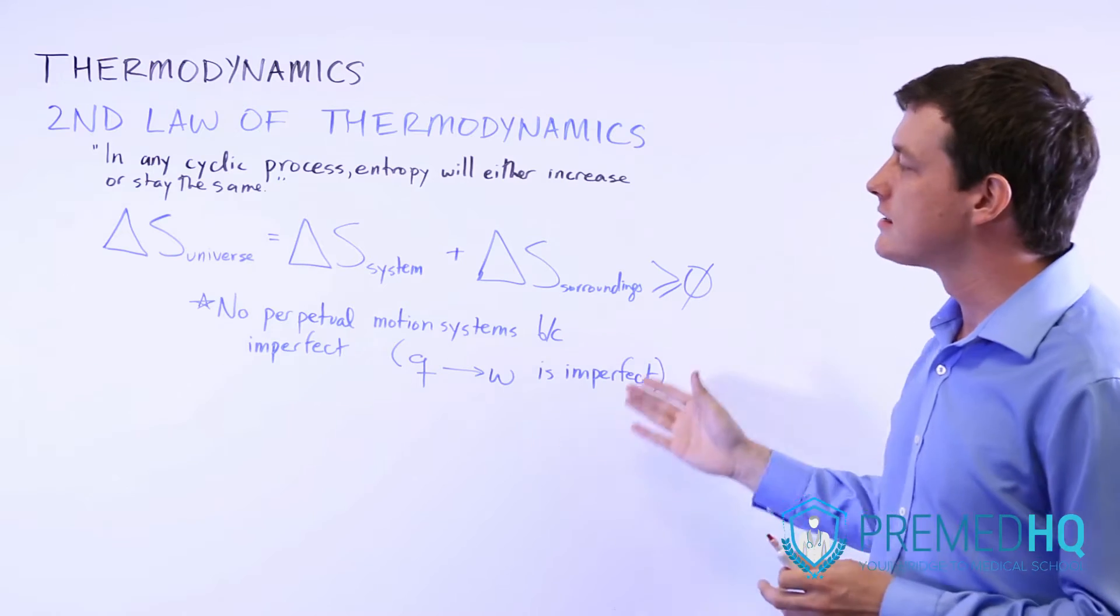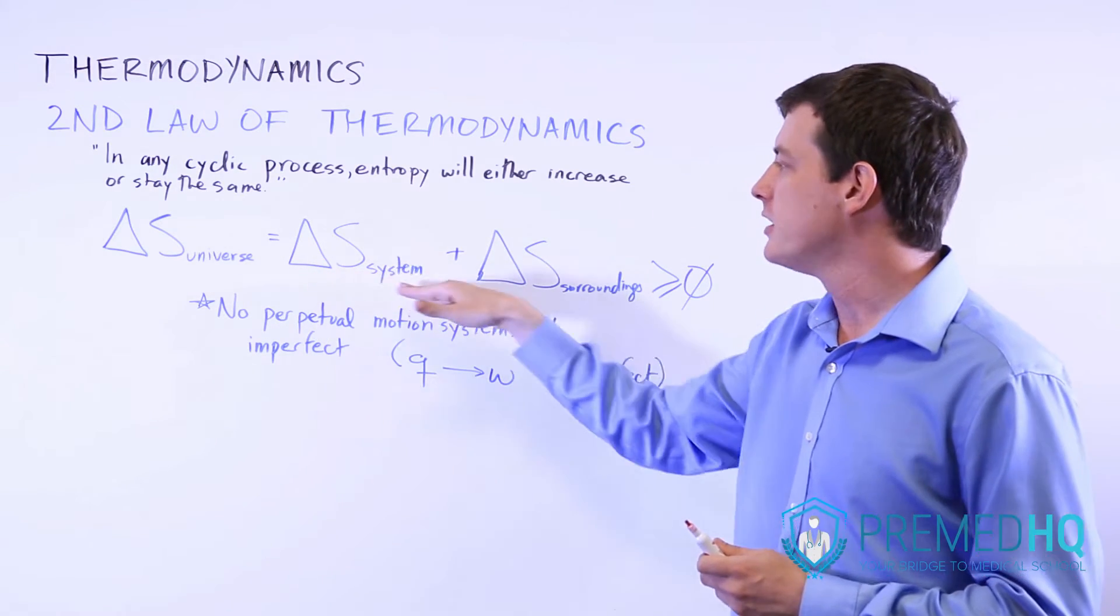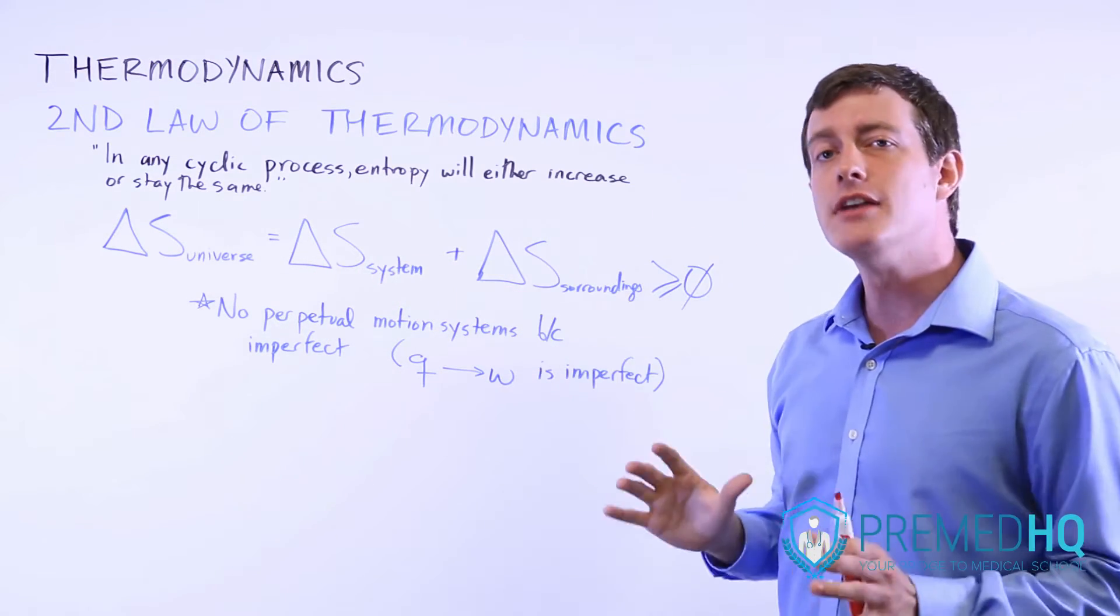What this means is that yes, you can have a decrease in entropy of a system, but if that happens, the entropy of its surroundings is going to have to increase.